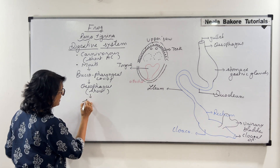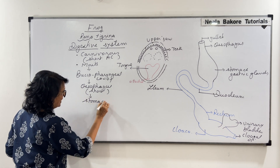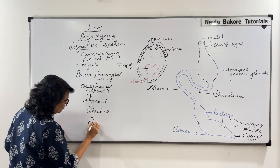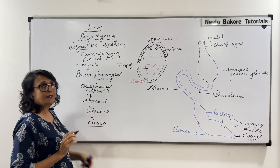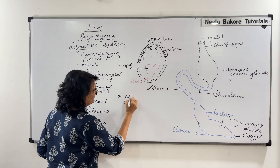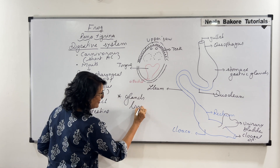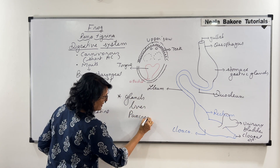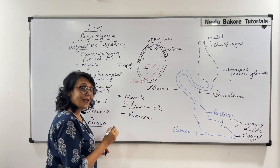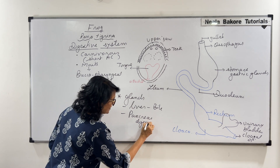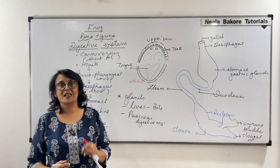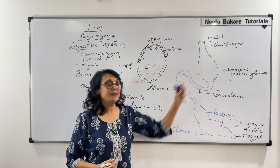After the esophagus is the stomach, then the intestine, which opens into the cloaca. The cloaca is very important to remember. There are two digestive glands: the liver and the pancreas. The liver produces bile and the pancreas produces all those digestive enzymes which help in digestion of proteins, fats, and carbohydrates. Gastric glands are present in the stomach and secrete all the gastric juices.